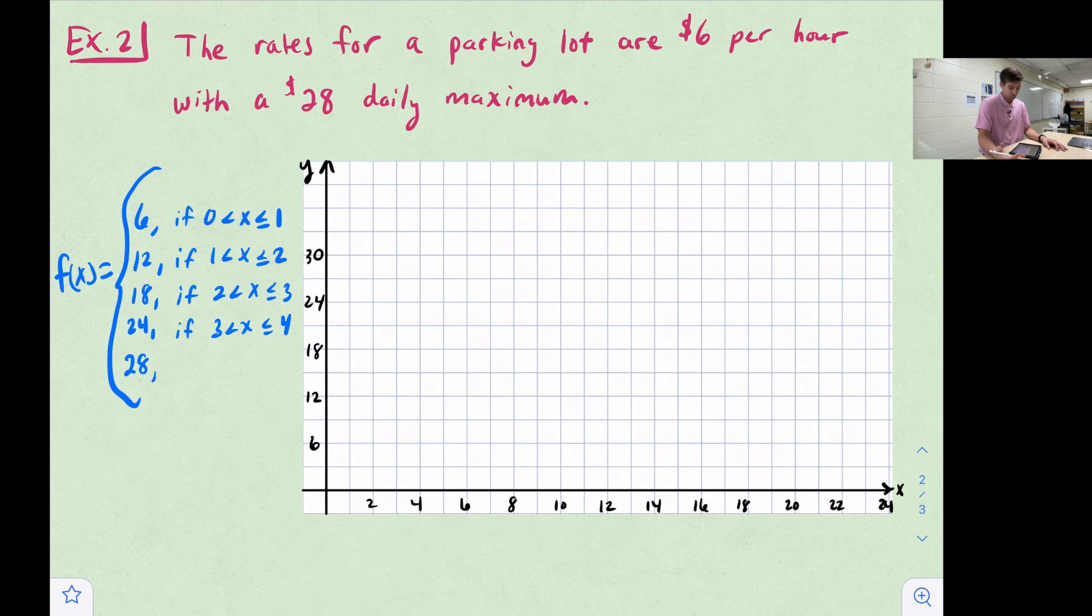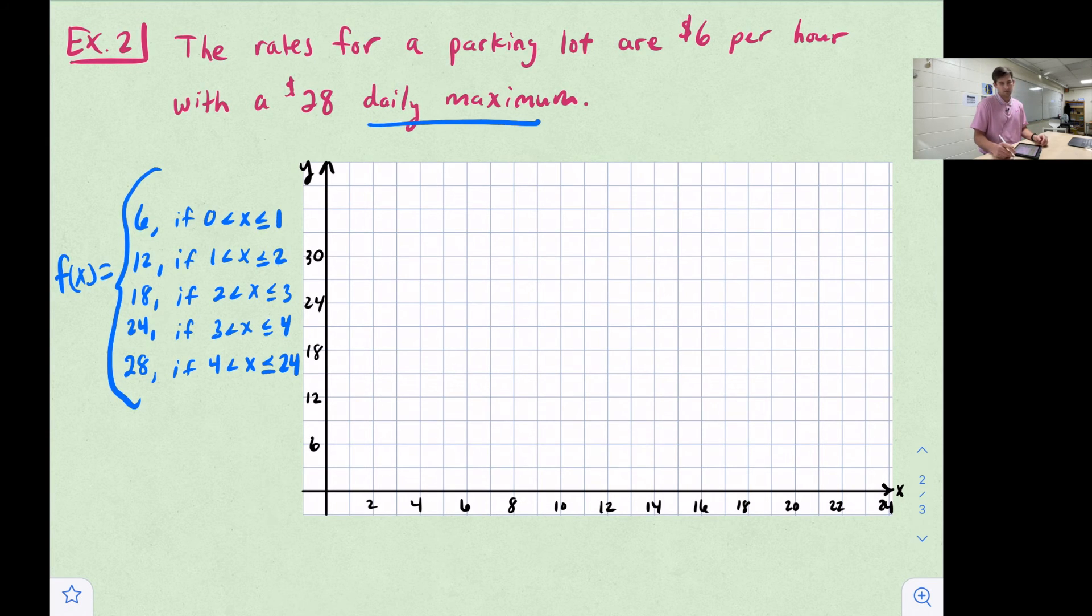Now after this, we could say from our fourth hour and onward, really all the way through the whole day, which would be 24 hours. So we could put a 24 right there. This tells us between for one hour, I'm going to pay $6, $12, $18, $24. But then if I just decide to leave my car there for the rest of the day, the most money that I'm going to pay is $28 because that's the daily maximum.